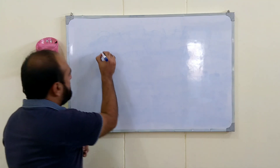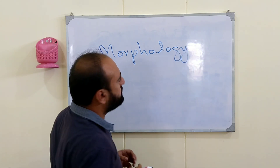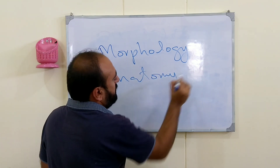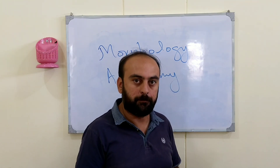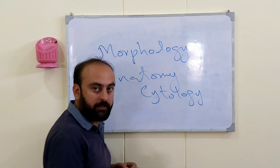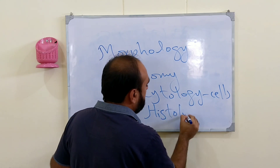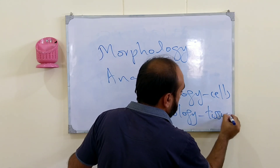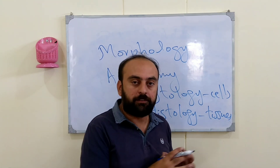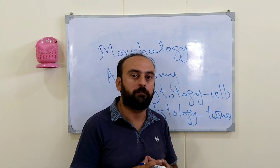Morphology deals with the study of form and structure of plants, whereas anatomy deals with the study of the structure of internal cells and tissues. Cytology is the study of the structure of cells, whereas histology is the study of the structure of tissues. These structure-function relationships underpin the fascinating and often complicated world of plants.